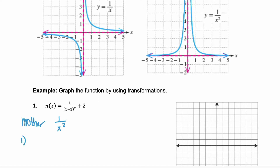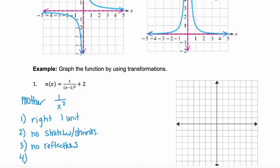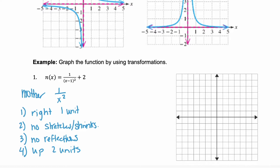First, do we have any horizontal shifts? We do. This 1 is a shift right by 1 unit. Second would be stretches or shrinks, and there are no stretches or shrinks — we're not multiplying by anything. Three, we're looking for reflections. Do we have a negative sign? No, so we have no reflections. Last are the vertical shifts. That would be the plus 2 here on the outside, and that tells us to shift up 2 units.